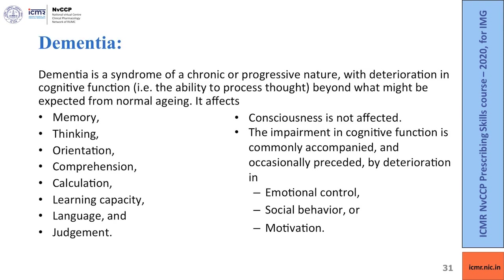Coming to dementia: it is a syndrome of chronic or progressive nature with deterioration in cognitive function beyond what is expected from normal aging. It affects memory, thinking, orientation, learning capability, judgment and more. In dementia, consciousness is not affected. The impairment of cognitive function is commonly accompanied by deterioration in emotion control, social behavior or motivation.